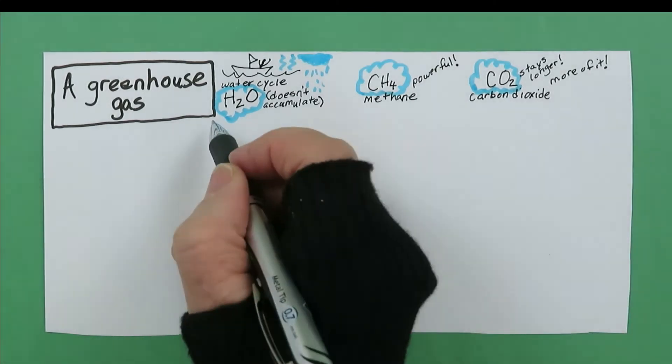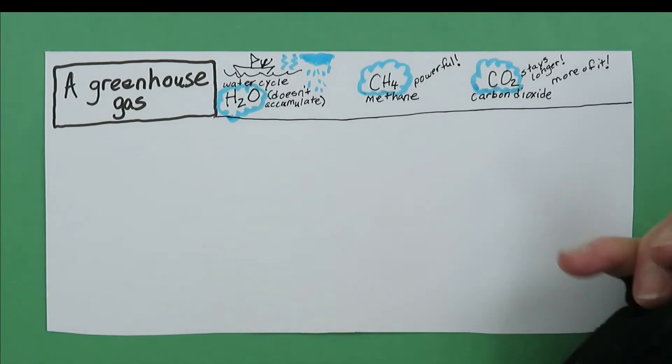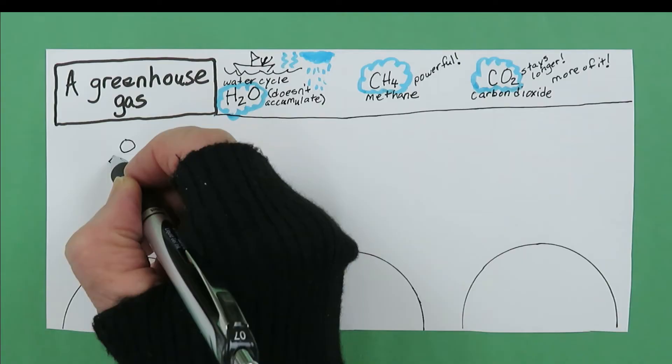Now, here's how greenhouse gases work. Imagine three identical Earths with three identical suns.